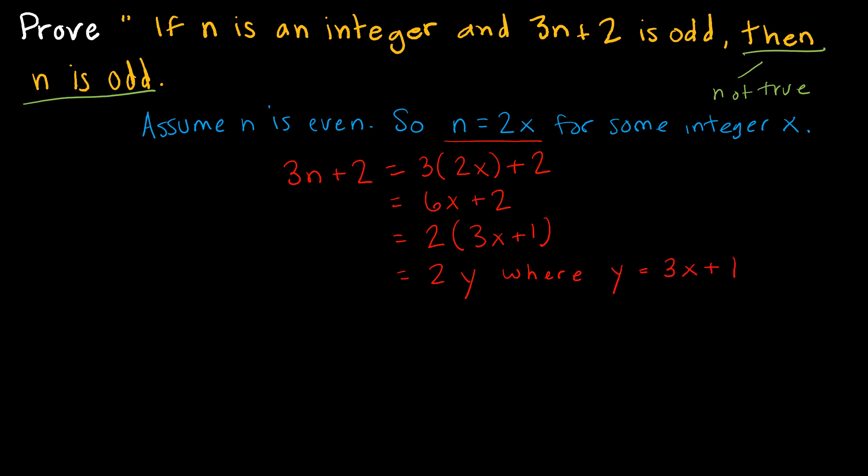Now, do I really care what Y is? No, I care that that's an integer, but what I do care about is that 3N plus 2 is equal to 2Y. Therefore, this shows that 3N plus 2 is even.